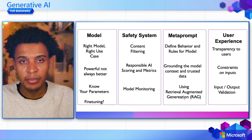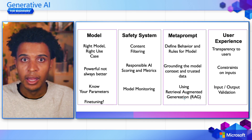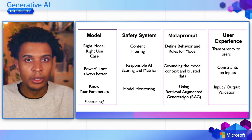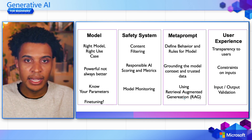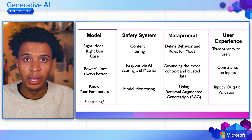Also in the safety system, things like content filtering — making sure the responses from the model go through a filter and do not present any harmful content. Also using responsible AI tools to build out scoring and metrics on responses, and monitoring the model and its responses are all great ways to build a good pillar of safety systems.